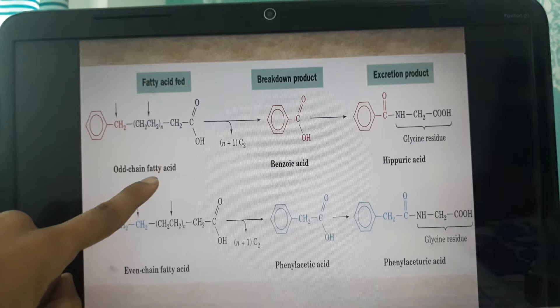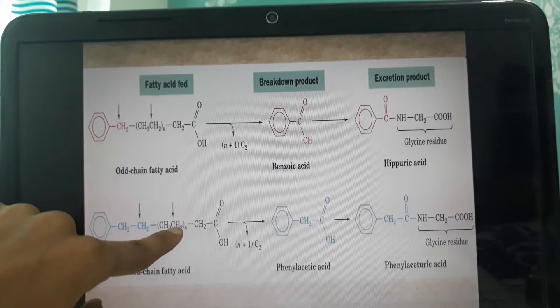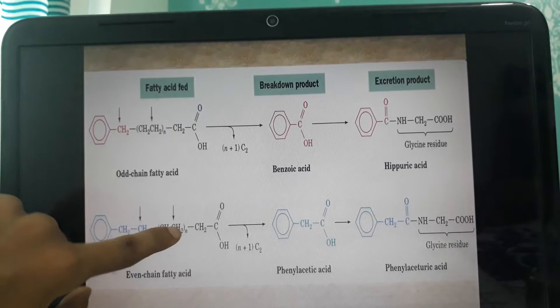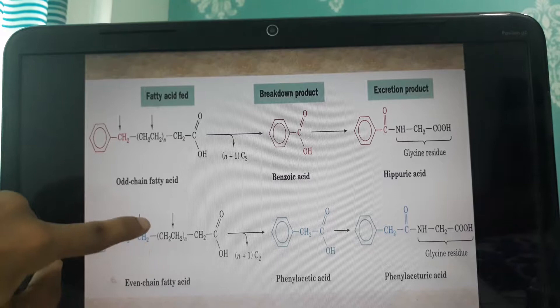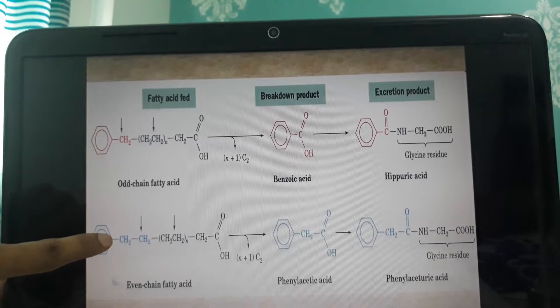For an even-chain fatty acid, the omega carbon is again labeled with the phenyl group. The beta carbon is oxidized to a carboxylic group, and the two-carbon unit is released in the first cleavage. In the second cleavage, the chain is carboxylated, designating a new alpha and beta carbon, and another two-carbon unit is released.